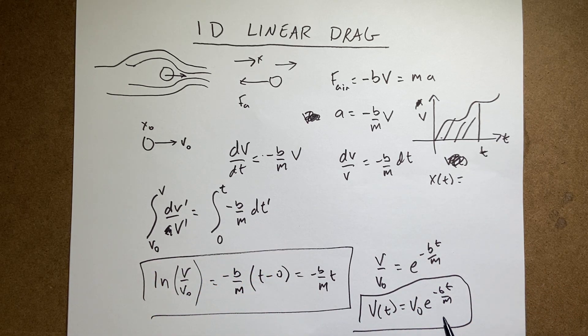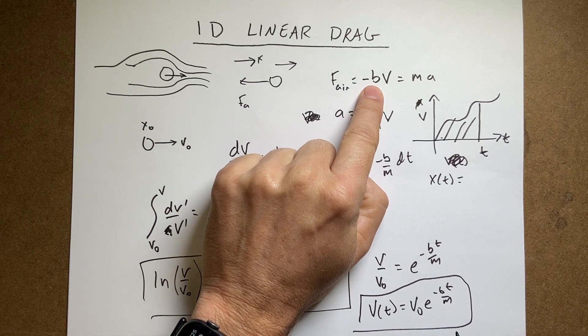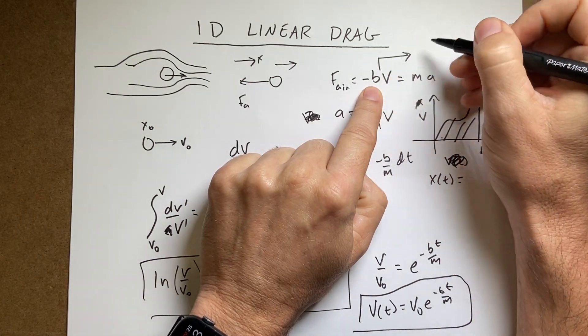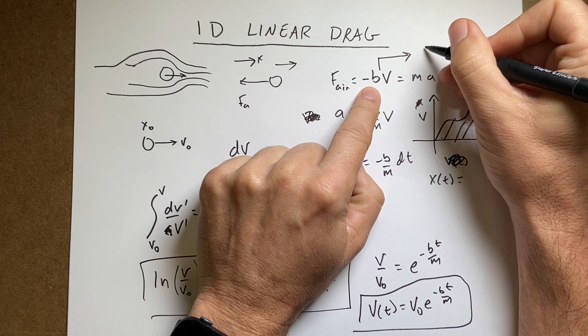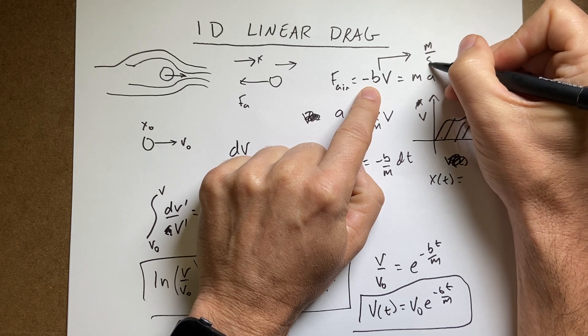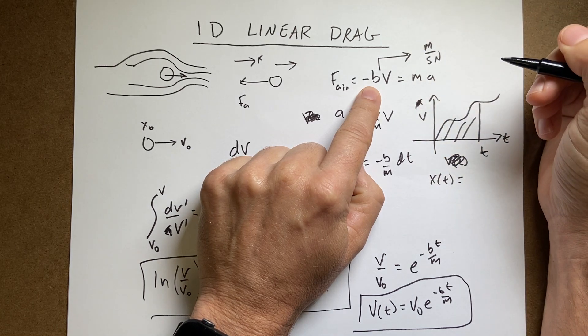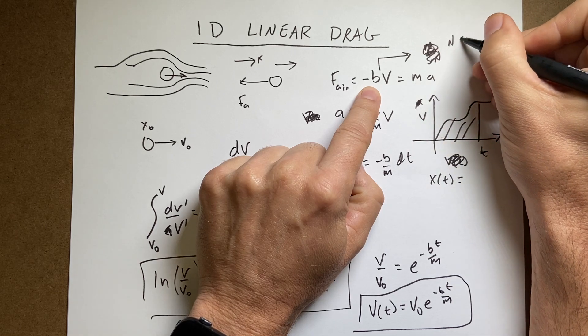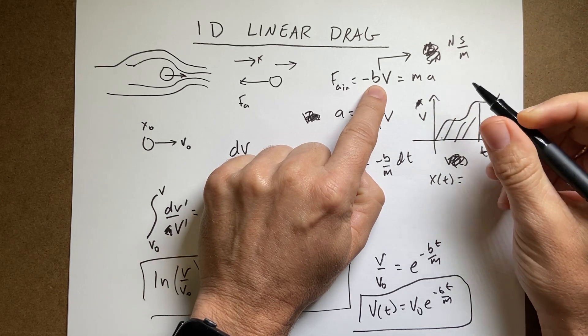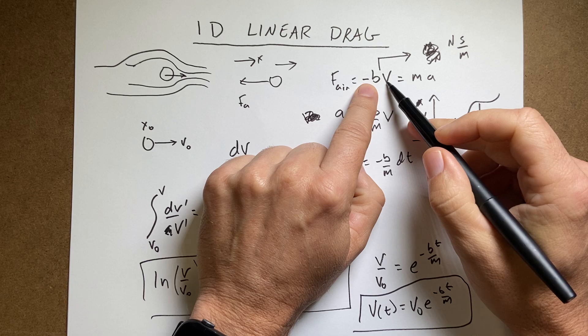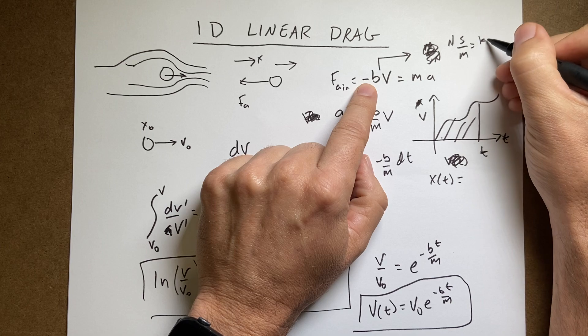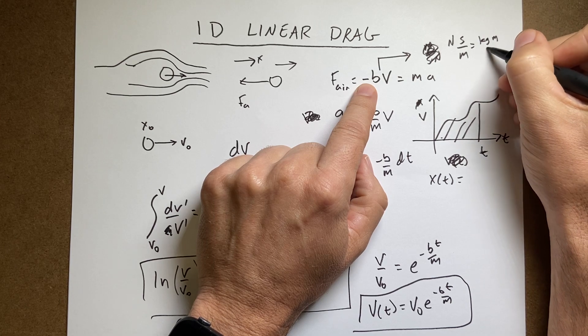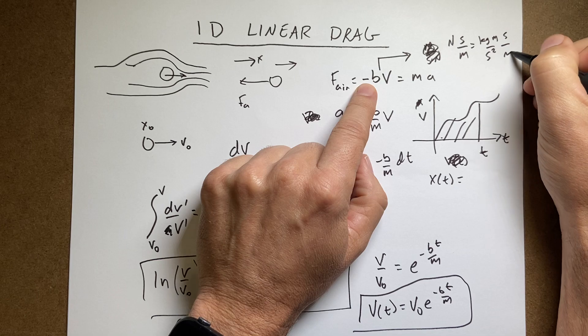Now this also has to be a unitless quantity. So let's just check. If B, what are the units for B up here? Well, this has to be in Newtons. So this would be a meter per second Newton. No, it'd be a Newton meter per second, right? Because then if I multiply that by meters per second, I get Newtons. And a Newton is a kilogram meter per second squared times seconds over meters.